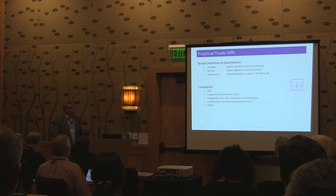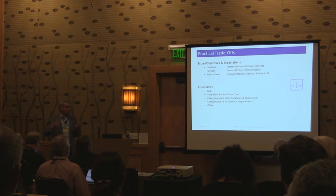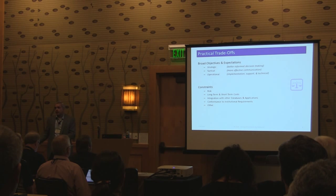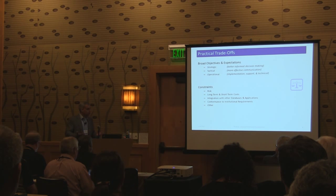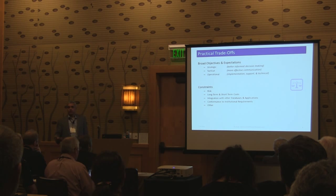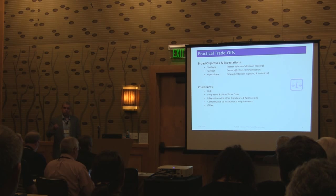We consider what we're trying to do and how broad and aggressive our objectives are, as well as our practical constraints in terms of both risk and cost. We're making our decisions within the context of goals, objectives, and cost. Ultimately, they're practical trade-offs — sometimes we don't necessarily choose the most capable product; we choose the product that on balance makes the most sense for us.